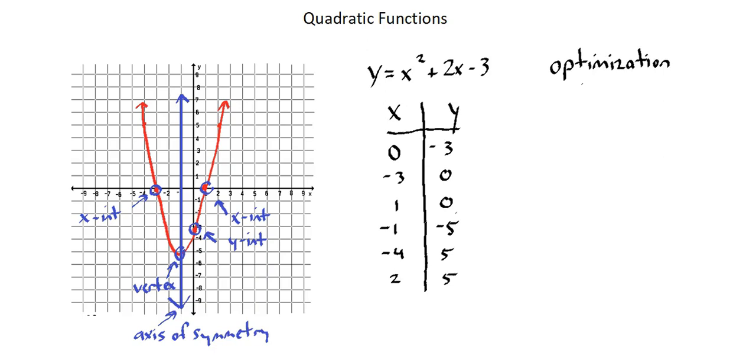Optimization is identifying the vertex, either the minimum or the maximum of a quadratic function. In our example, we're working with the format y equals ax squared plus bx plus c. And the x value of the vertex is negative b over 2a.